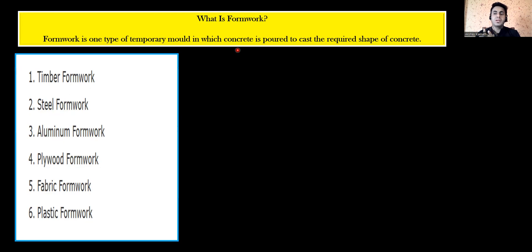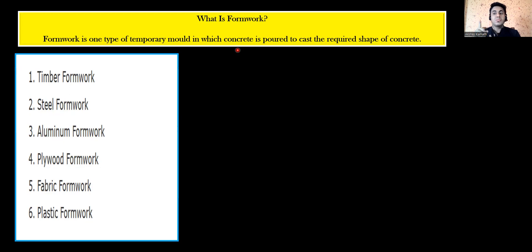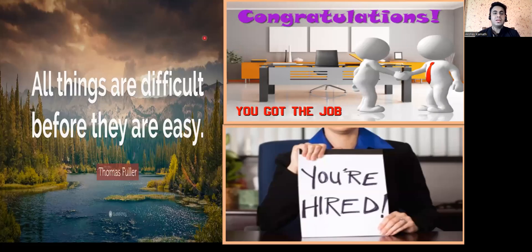To summarize the practical usage: if slab work is going on, you say 'slab centering work is going on' because the slab is a horizontal element. If beam outside shuttering is being placed or column formwork is being done, you say 'beam shuttering' or 'column shuttering is going on' because these are vertical elements. Wherever you see a vertical element, it is shuttering; for horizontal elements like slabs, it is centering. I hope your concepts are clear — see you in the next lecture.